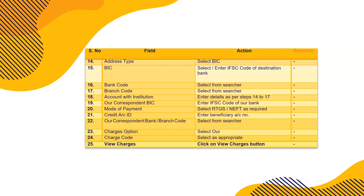For the charges option, always choose 'OUR' — meaning the applicant (sender) bears the charges, not the beneficiary. The charge code is automatically populated. Select as appropriate — RTGS or NEFT per charge code. Click 'View Charges' — a small screen will appear showing the service charges. RBI is not charging anything; only banks charge small nominal amounts.